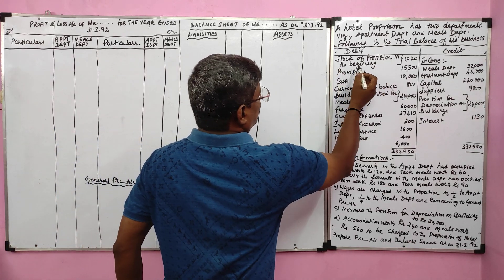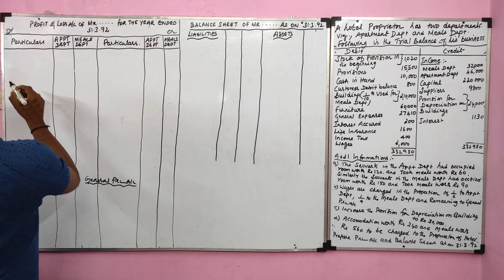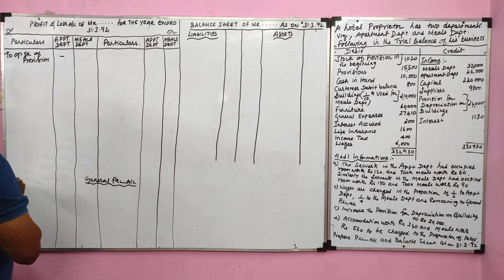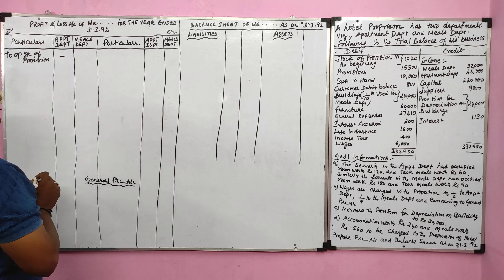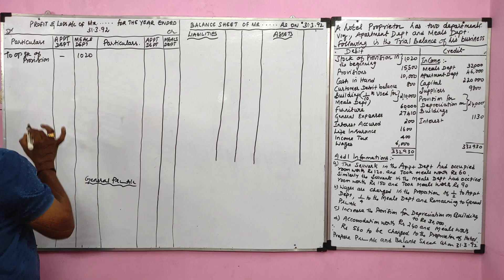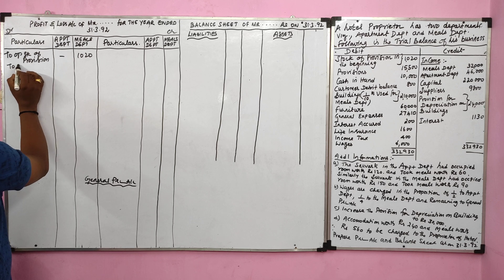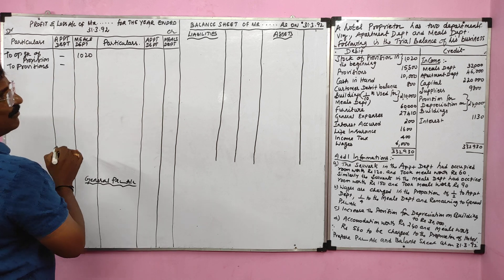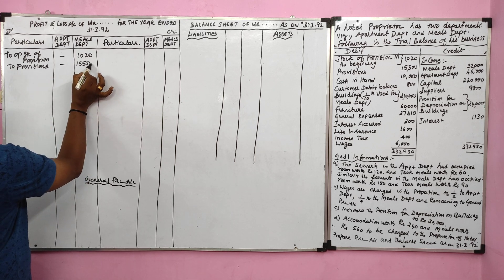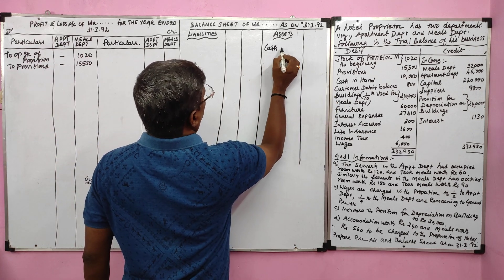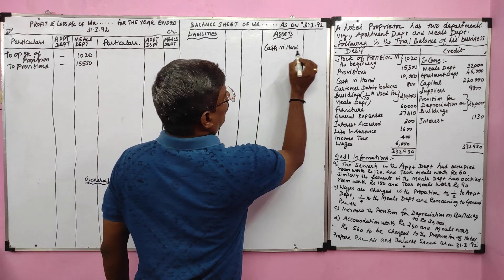Stock of provision in the beginning is the opening stock of groceries. Provision is not applicable to the apartment department; it is applicable to the meals department, value 1,020. Then, provision — meaning grocery purchases — should be debited to the profit and loss account and recorded in the meals department, value 15,500. Cash in hand is an asset, value 10,000.